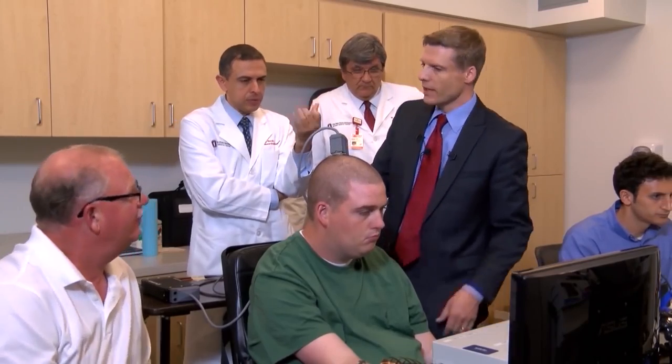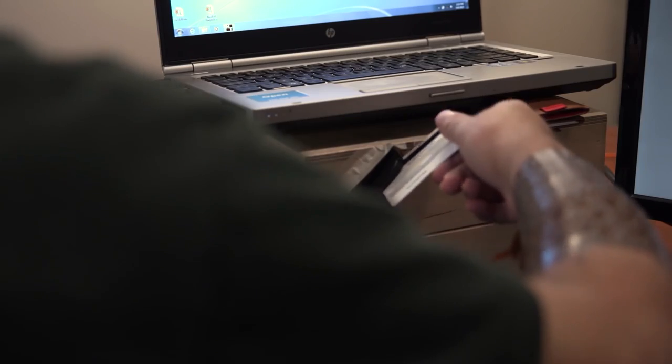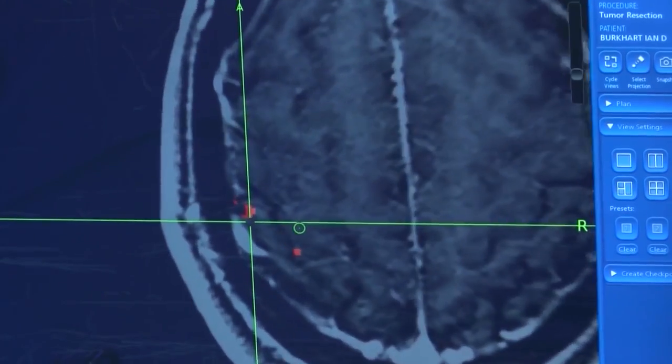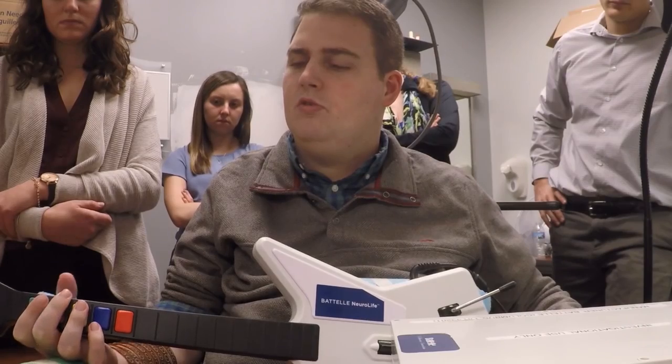The scientists who started the project had hoped to produce some movement in Ian's fingers, but the groundbreaking experiment was even more successful than they had ever imagined. With the aid of his computer implant, Ian can use his fingers to perform a variety of tasks, including picking up a glass and pouring from it, and even playing Guitar Hero.